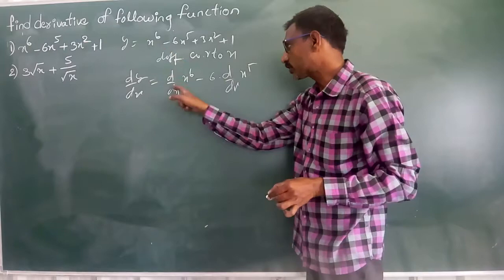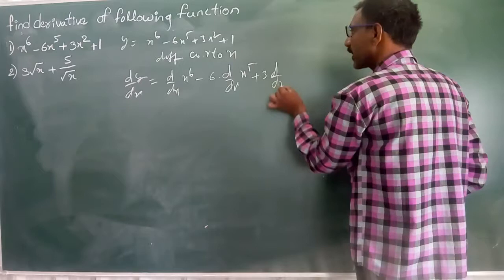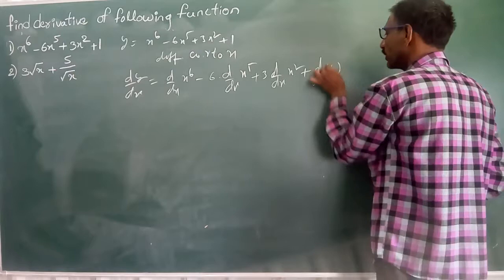We are derivative this one after this one. After that 3 into d by dx of x square plus d by dx of 1.